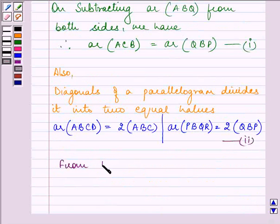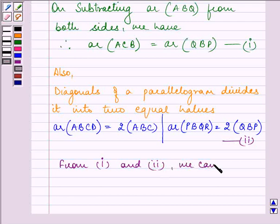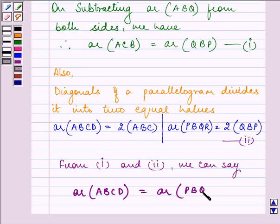So from the first and second equation, we can say that area of ABCD is equal to area of PBQR. And this is our required proof. This ends the session. Hope you have a good day. Bye for now.